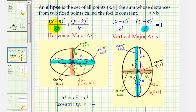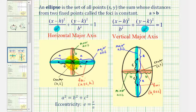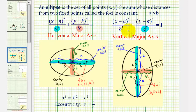When a squared is under the x part of the equation, we have a horizontal major axis. When a squared is under the y part of the equation, the major axis is vertical. The value of a gives us the distance from the center to the two endpoints of the major axis in both cases, and the smaller denominator is b squared, where b gives us the distance from the center to the two endpoints of the minor axis.